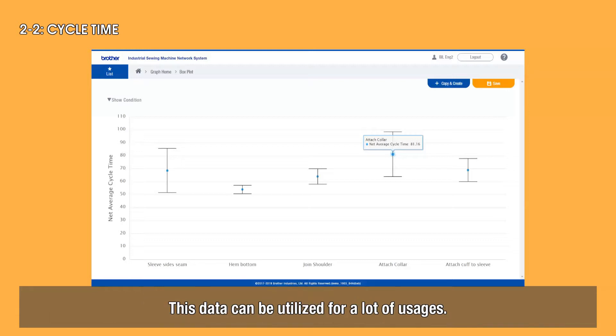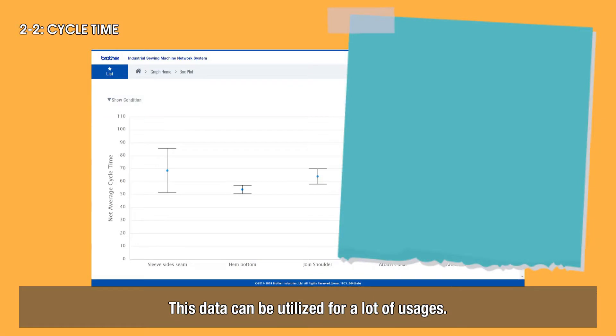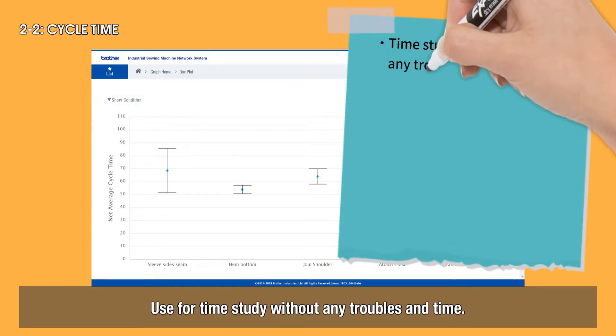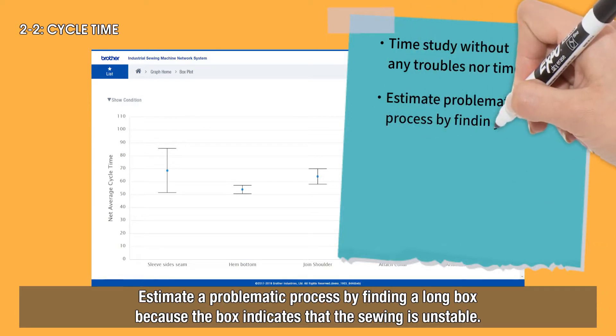This data can be utilized for a lot of usages. For example, use for time study without any troubles in time. Estimate the problematic process by finding a long box because the box indicates the sewing is unstable.